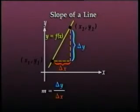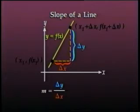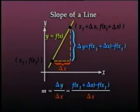Now we'll write the slope formula using functional notation. That is, we'll let y equal f of x. Then we can write the point x1, y1 as x1, f of x1. And we can write the point x2, y2 as x1 plus delta x, f of x1 plus delta x. Substituting these values into the slope formula, we have m equals f of x1 plus delta x minus f of x1 divided by delta x.